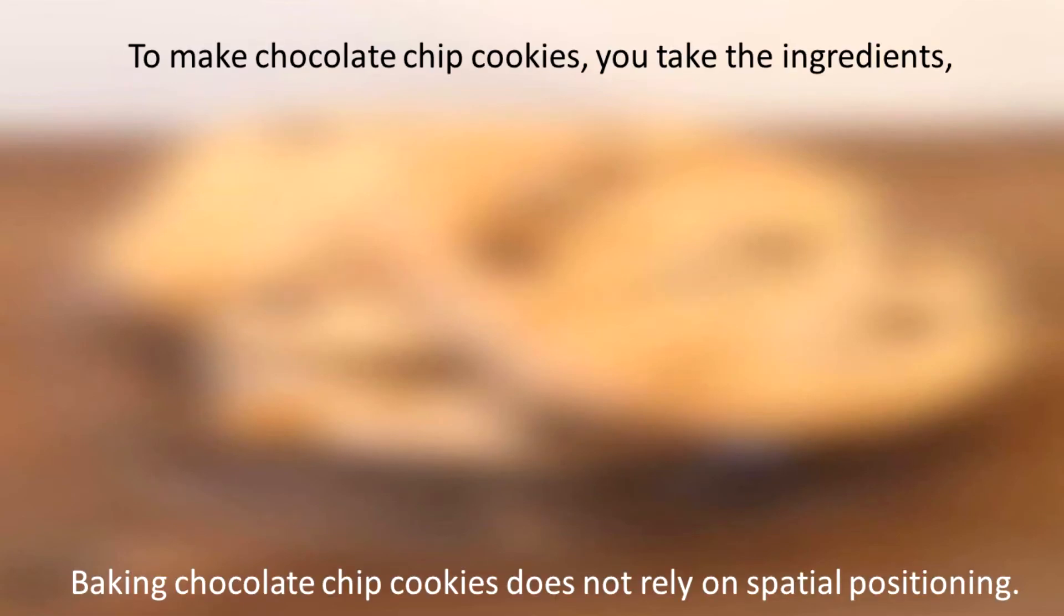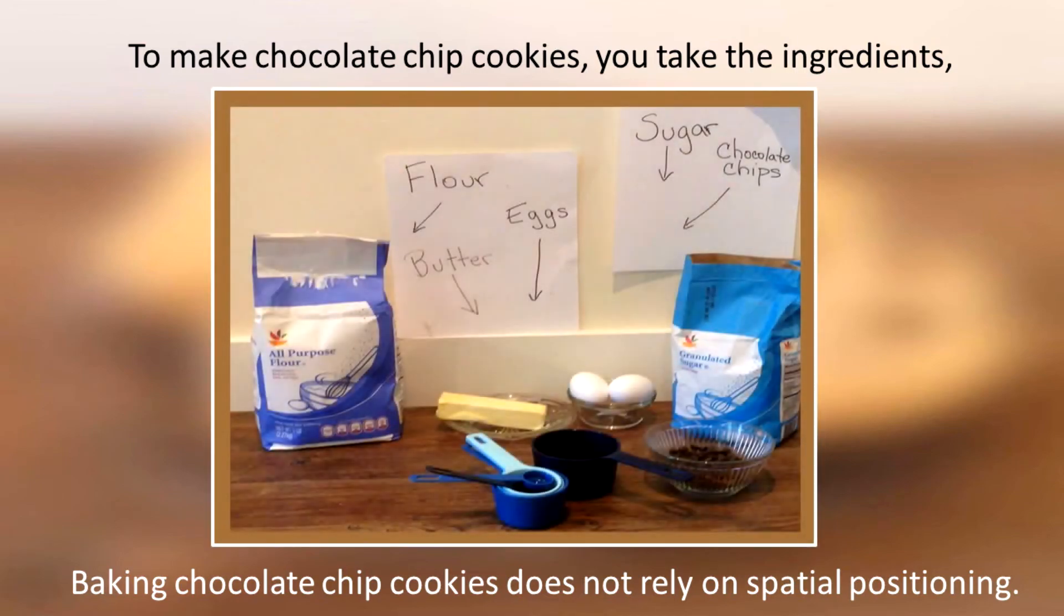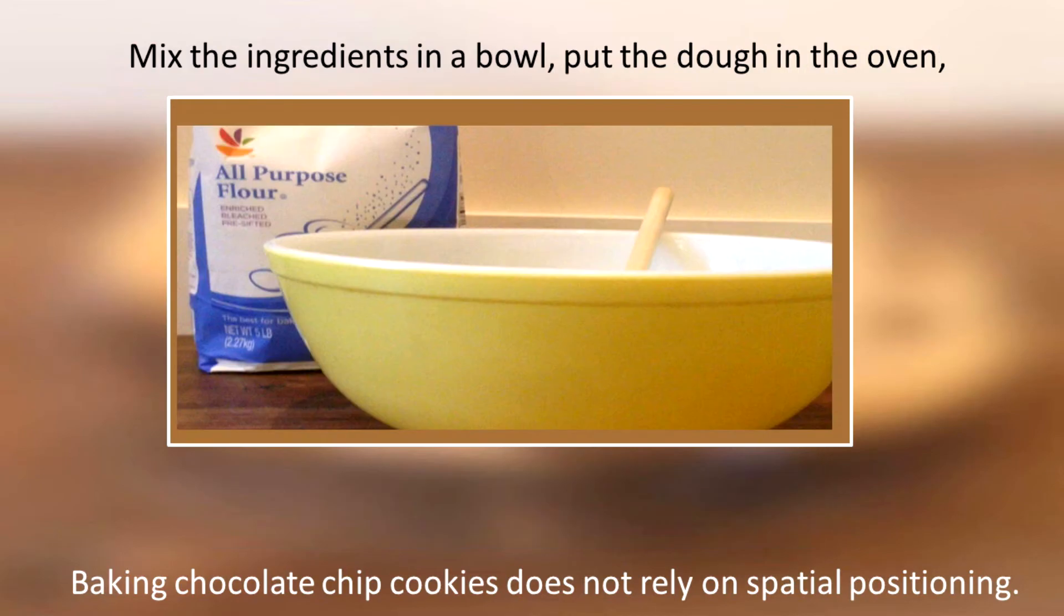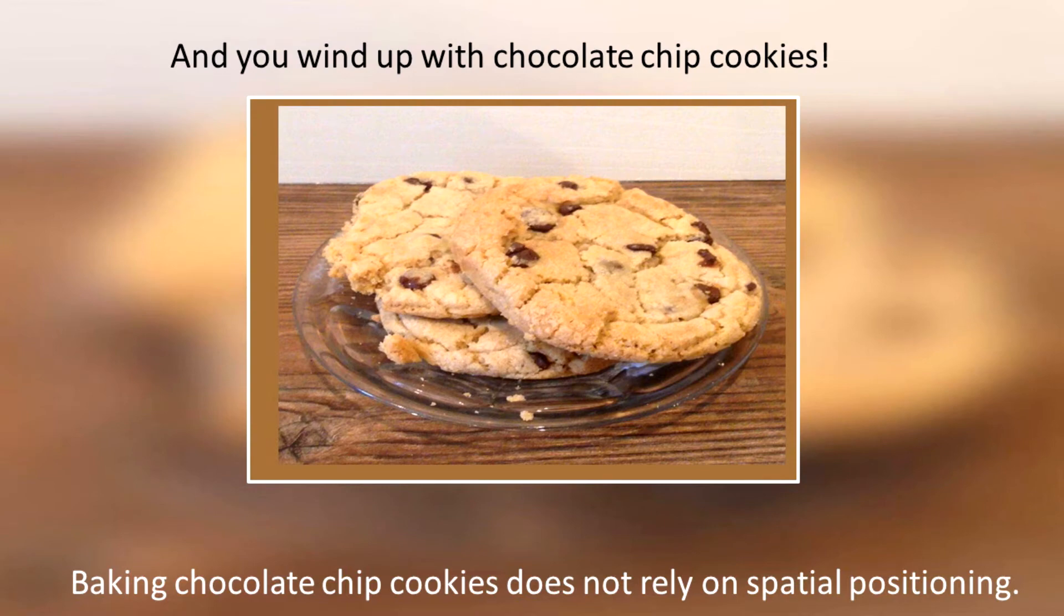Many things don't rely on spatial positioning. For example, if we're going to make chocolate chip cookies, you take all of the ingredients, and you put them in a bowl, mix them together, and put the dough in the oven, and you wind up with chocolate chip cookies.